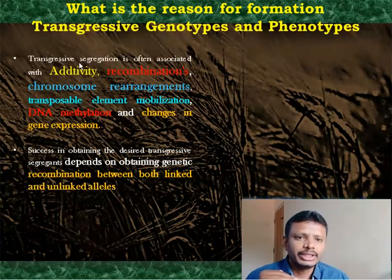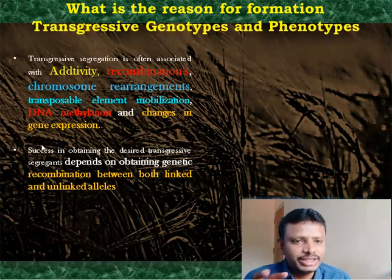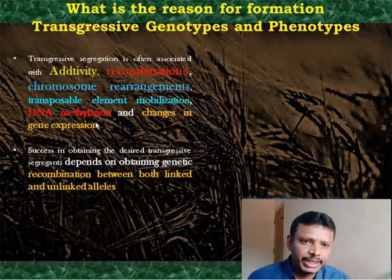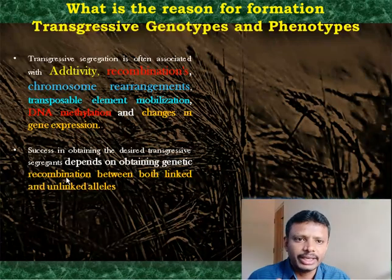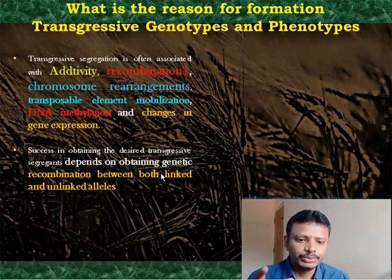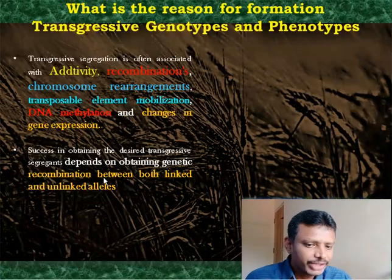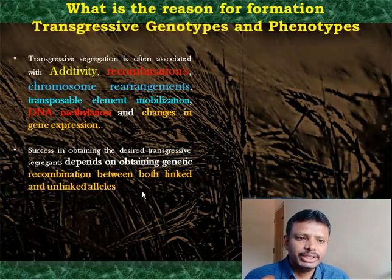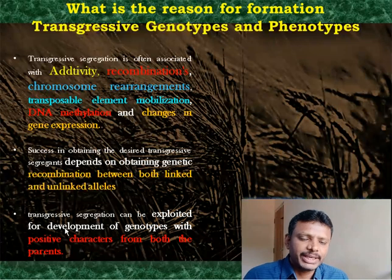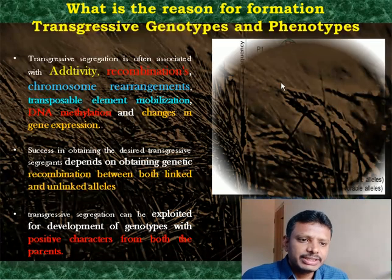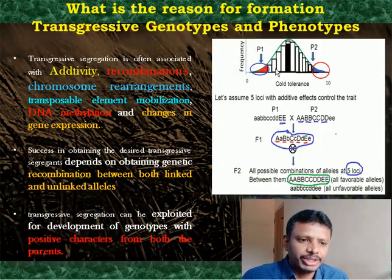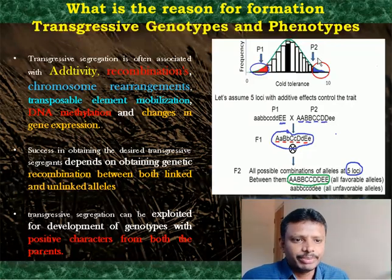Ultimately all these events give rise to new variants different from parental types. Transgressives appear in F2 generations. The task of a breeder is to understand these concepts clearly and bring the best genes together to get an F1 that is a completely new breed for the next generation.